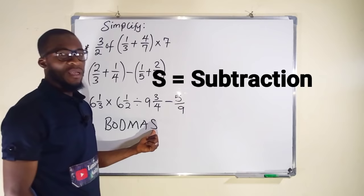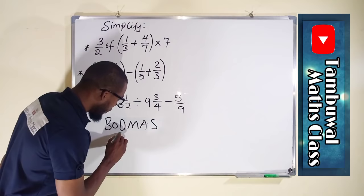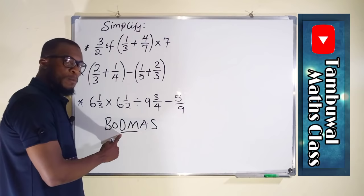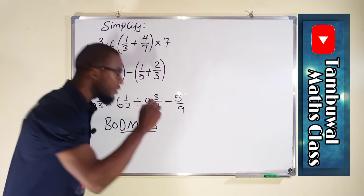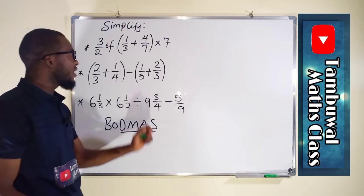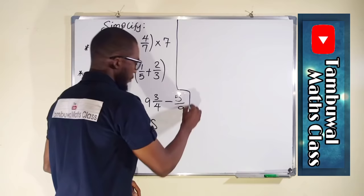The rule states that Division and Multiplication are done simultaneously from left to right, starting with the one that comes first. If you see multiplication before division, you start with multiplication, and vice versa. The same applies to Addition and Subtraction — done simultaneously from left to right, starting with whichever comes first. If you see subtraction before addition, you begin with subtraction, and vice versa.